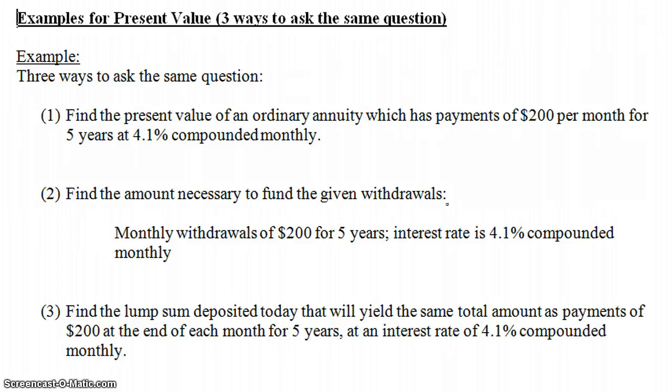And remember, your money in the bank account is gaining interest. So you can't just take your $200 and multiply it by 60, right, you make 60 payments, because that's not taking into account the interest that the account is getting.